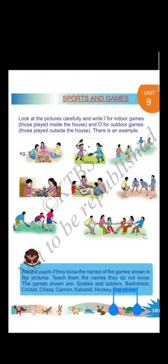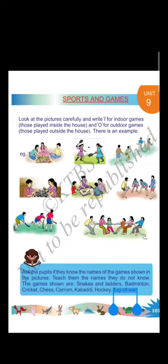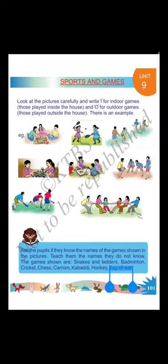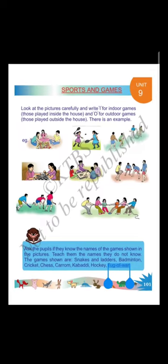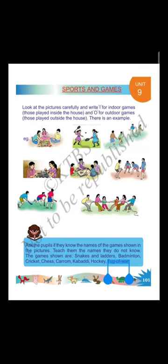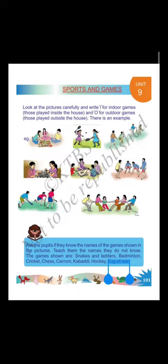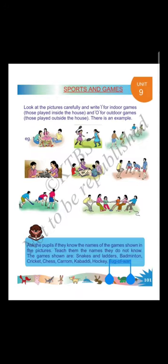Dear students, let's see. The first one is snakes and ladders. Next, cricket. Next, chess. Next, carrom. Next, kabaddi. Next, hockey. The last one is tug of war. There are indoor games and outdoor games on this page. We have to identify and write down I for indoor games and O for outdoor games.